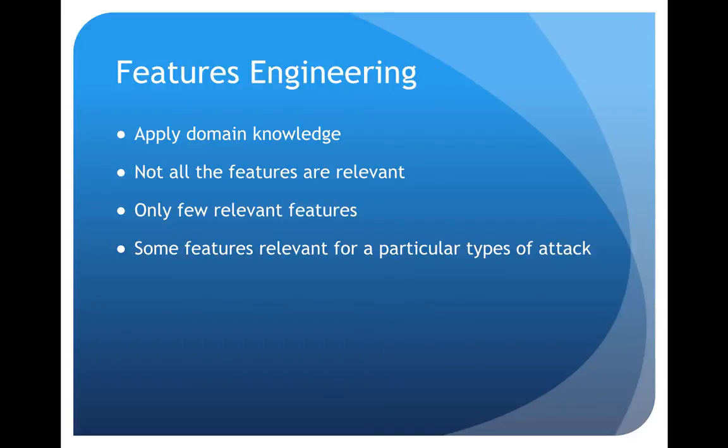Next problem was that not all the features were relevant, so we have to do some feature engineering. We can apply domain knowledge. For example, if it's a DOS attack we know that the protocol type is probably going to be ICMP, so we can use this domain knowledge and derive some rules or signatures.